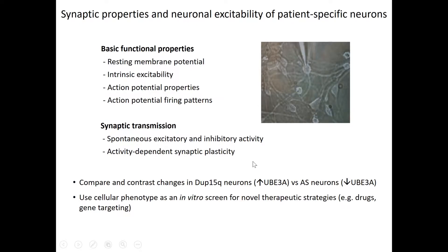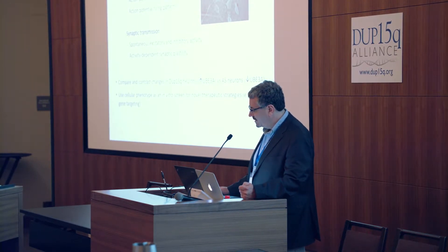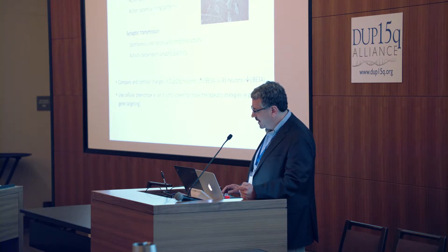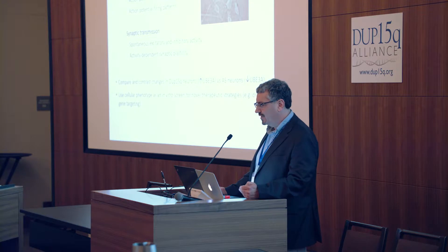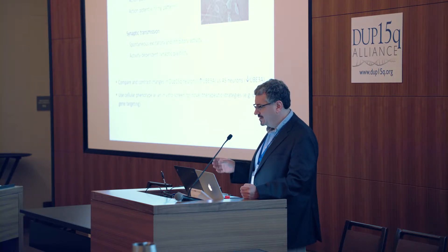We're interested in comparing and contrasting changes in neurons with either increased or decreased levels of UBE3A. These human cells give us the ability to look at very early stages of development, which are often not examined in mouse models. There may be differences in intrinsic basic properties of cells early in development that become compensated for later, but because those changes exist in the early developing nervous system, they can create enduring changes in the formation of neural circuits and their ability to undergo plasticity.